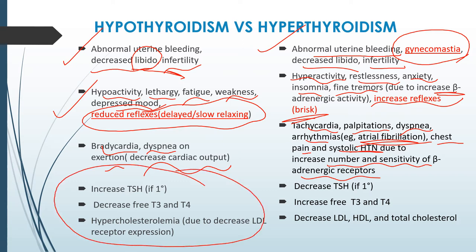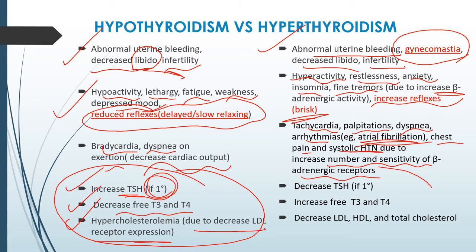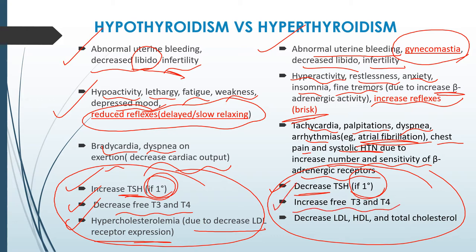In lab findings, primary hypothyroidism shows increased TSH, decreased free T3 and T4, and hypercholesterolemia due to decreased LDL receptor expression. In primary hyperthyroidism, there is decreased TSH, increased free T3 and T4, and decreased LDL, HDL, and total cholesterol.